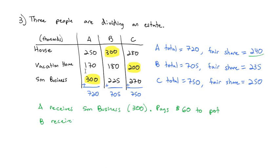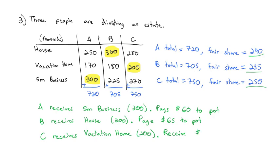B receives the house, which B values at $300,000. But B says a fair share is $235,000, so B has to pay the difference. B pays $65,000 to the pot. C receives the vacation home, which is worth $200,000, according to C. But C said a fair share was $250,000. C is short $50,000, and so C is going to receive $50,000 from the pot.